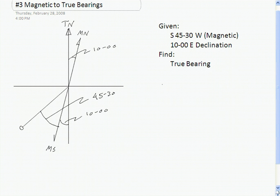The true bearing is going to equal 45-30 plus 10, because the true is measured from true south. So it's 55-30, and it is still in the southwest quadrant.